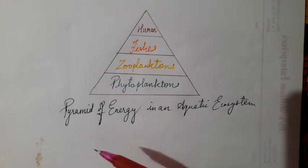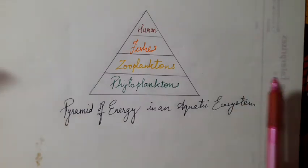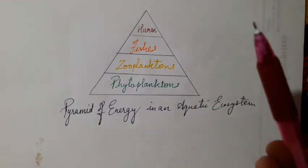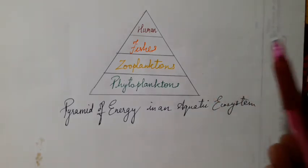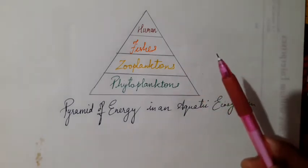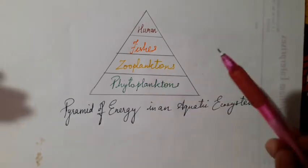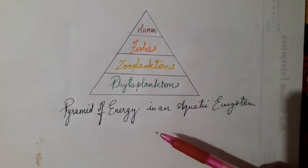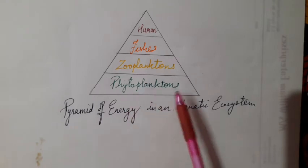Then the second one is the pyramid of energy in an aquatic ecosystem. The same thing is present in water also. We all know that aquatic ecosystem is also very rich in diversity. Even that needs to be balanced. So how it is balanced? What exactly happens? The same chain goes on in the water itself.